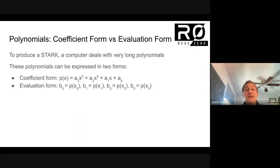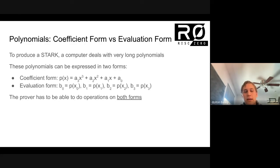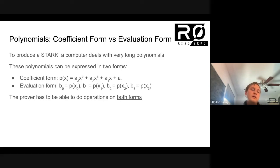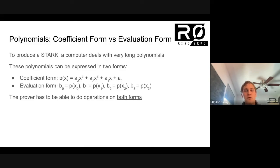There are ways of going back and forth between these two things, and this is really important for STARK software because it turns out the person producing a STARK proof is actually going to have to do operations involving both of these forms. There will be a list of evaluations, and the prover is going to have to publish some of those, and then there will be a coefficient form that the prover will transform back into to do some arithmetic operations on these polynomials to reduce them.